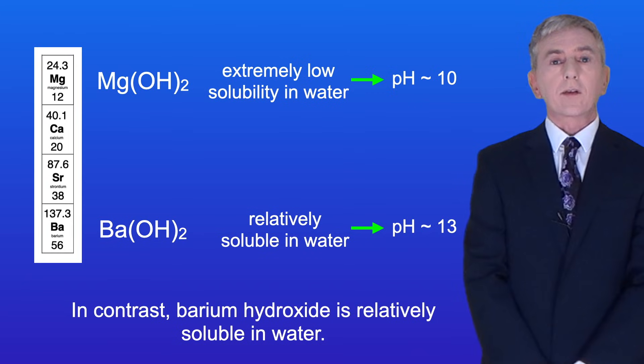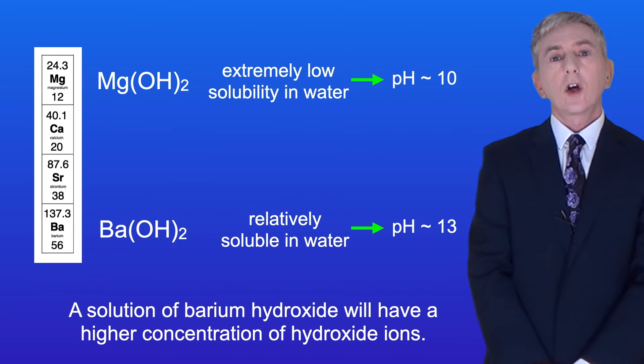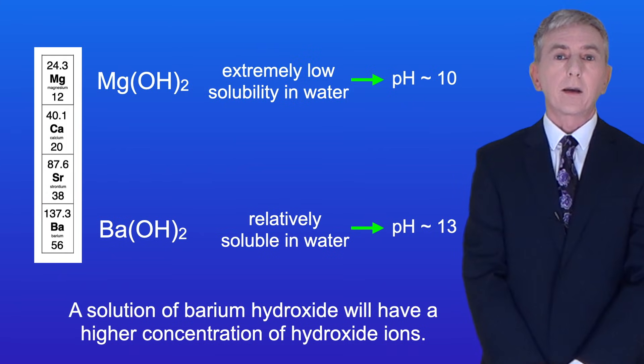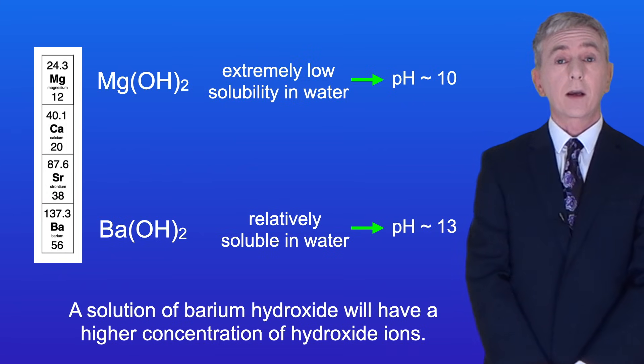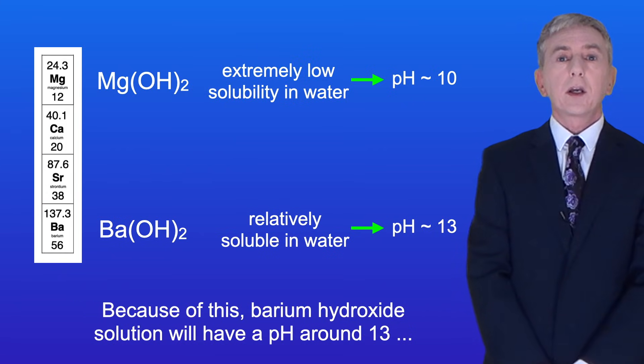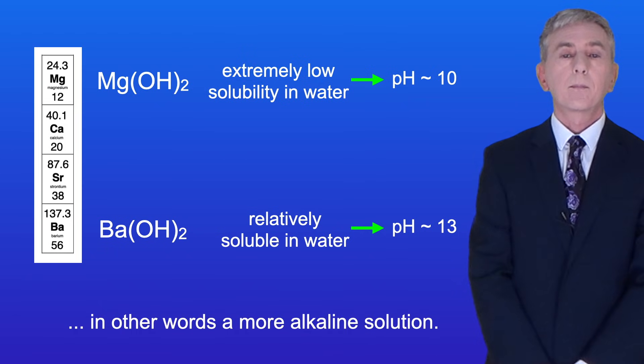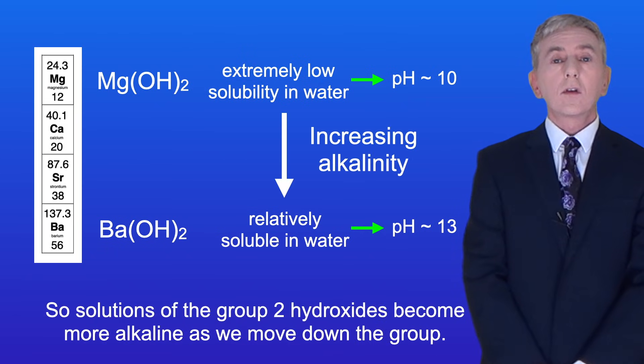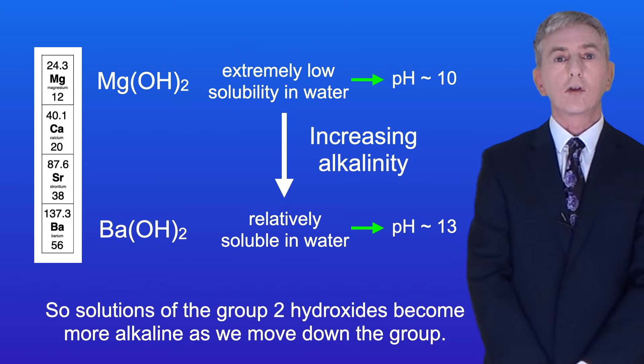In contrast, barium hydroxide is relatively soluble in water, so a solution of barium hydroxide will have a higher concentration of hydroxide ions. Because of this, barium hydroxide solution will have a pH around 13, in other words a more alkaline solution. So solutions of the group 2 hydroxides become more alkaline as we move down the group.